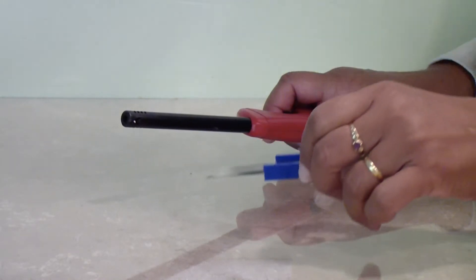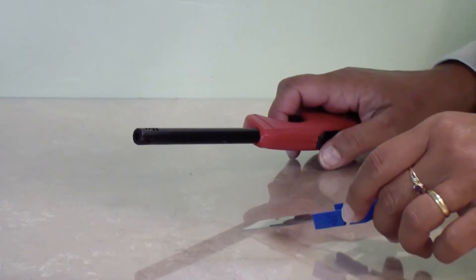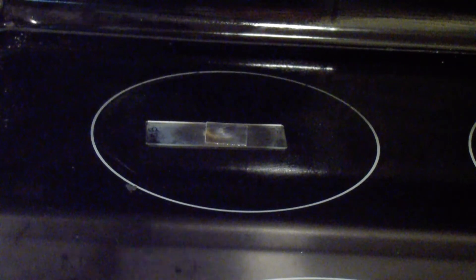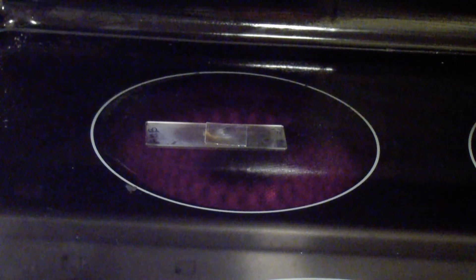One method is to use a gas lighter or lit match to heat the slide for two to three seconds. The other is to use a cooking element. Put the slide on a cold element, turn the element on just for a couple of seconds and turn it back off. The heat reaches hundreds of degrees and kills any living organisms.